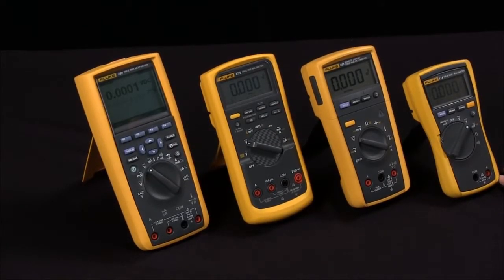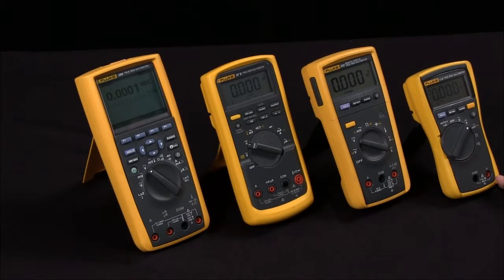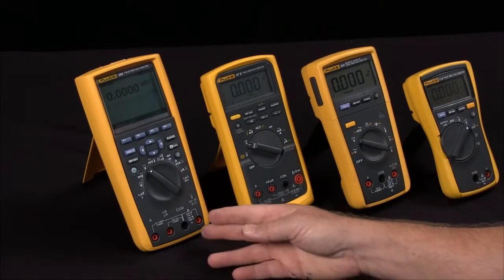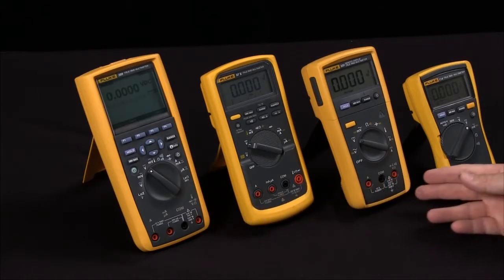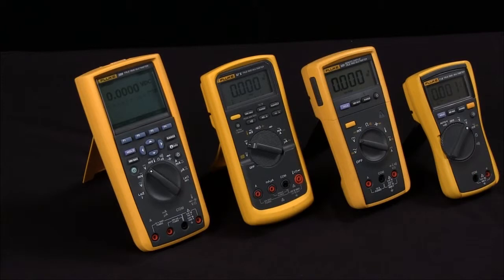There's a difference between the specifications of accuracy and resolution. Accuracy relates to how closely the measurement you're taking is to the true value of that measurement. Different multimeters will have different levels of accuracy depending on the capabilities within that multimeter.